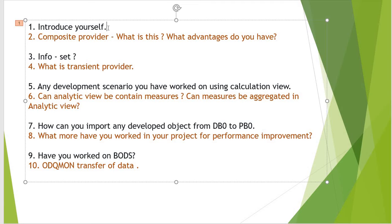The seventh question is: how can you import a developed object from development to production? You explain how to transport objects. If you talk about the SAP HANA side, there is a T-code called SCTS_HTA. Using this T-code, you can transport your HANA objects from your development box to quality and then to production. You should explain how you use this in your project.